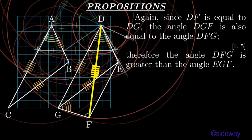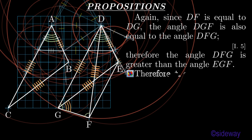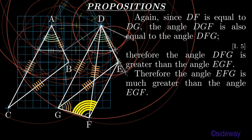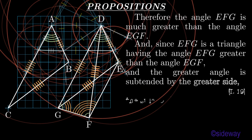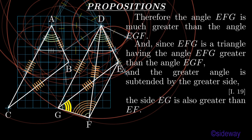Again, since DF is equal to DG, the angle DGF is also equal to the angle DFG, by Book 1 Proposition 5. Therefore the angle DFG is greater than the angle EGF. Therefore the angle EFG is much greater than the angle EGF. And since EFG is a triangle having the angle EFG greater than the angle EGF, and the greater angle is subtended by the greater side, by Book 1 Proposition 19, the side EG is also greater than EF.